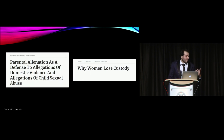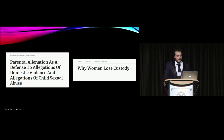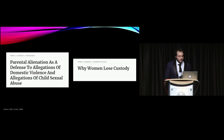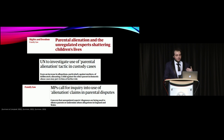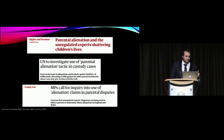As an example of this affecting public perception, I found articles in the United States through Forbes — one on why women lose custody and another on how alienation is used as a defense to domestic violence and child sexual abuse allegations. Similarly in the UK, I found three articles from The Guardian discussing the same thing and questioning evaluators in those cases. The caveat is all three UK articles were written by the same person, suggesting an agenda, but they illustrate significant public influence.